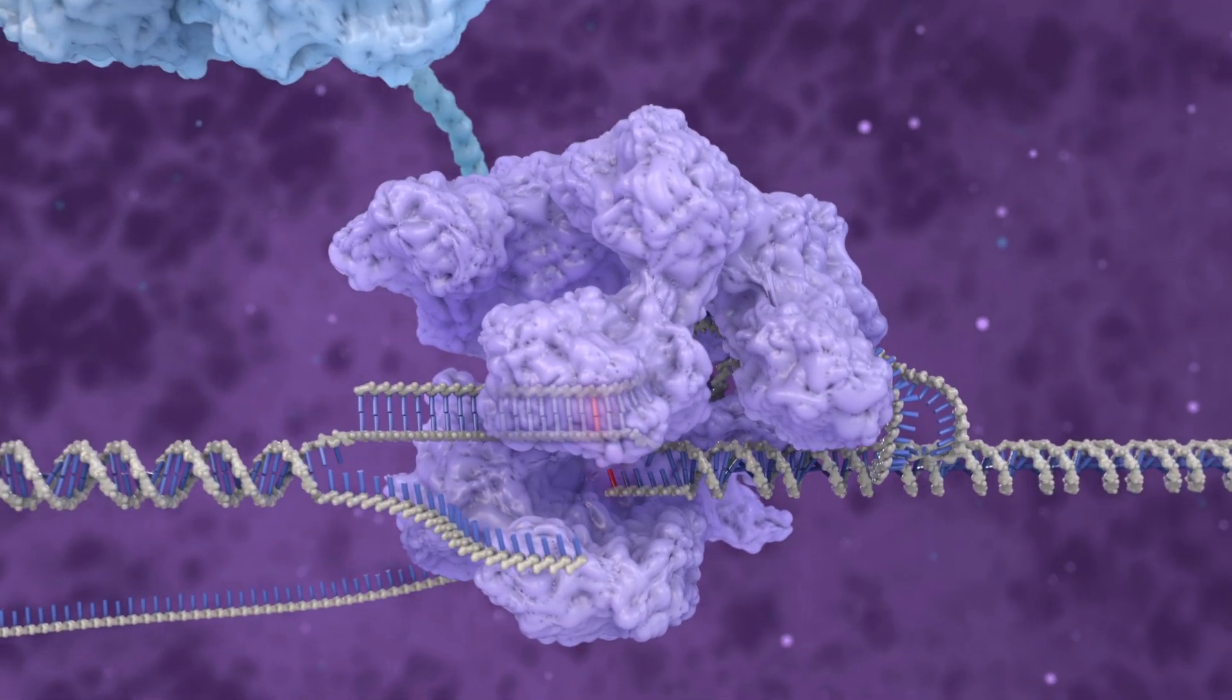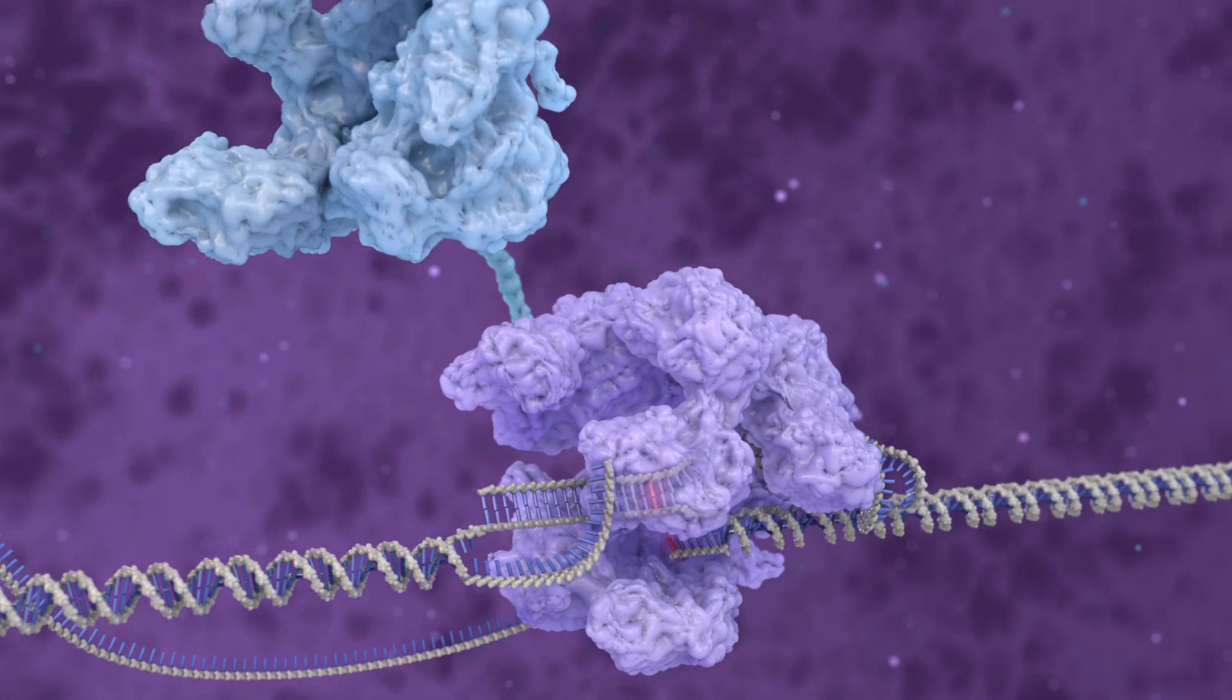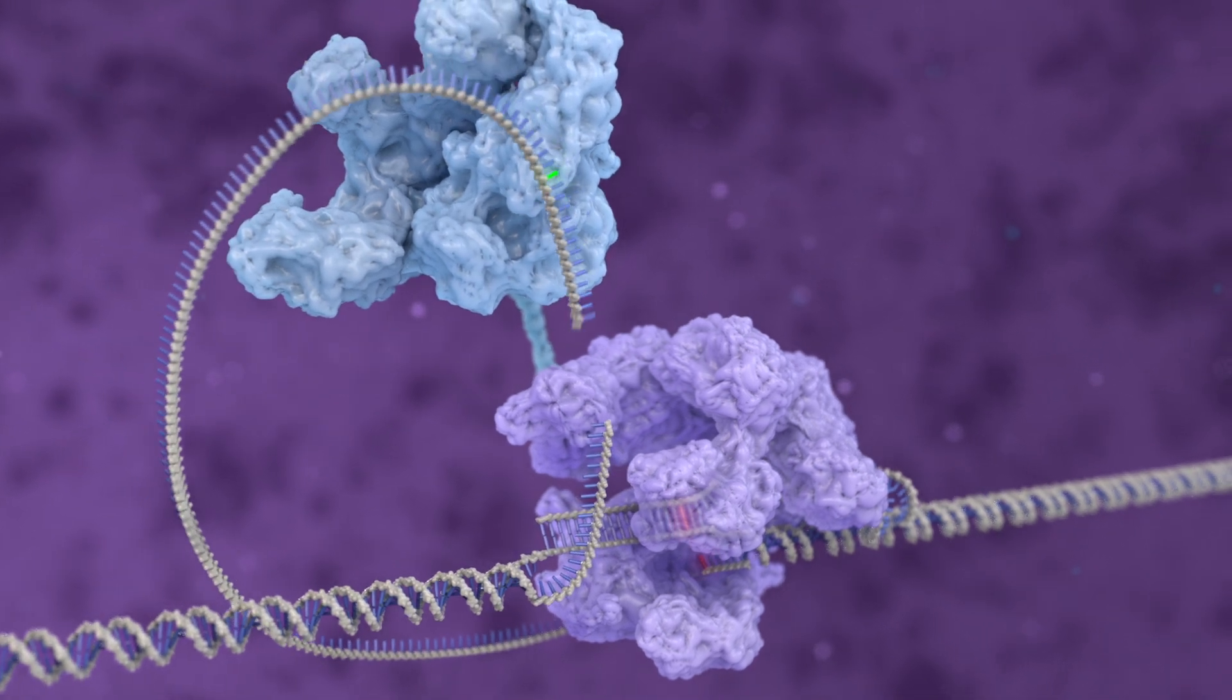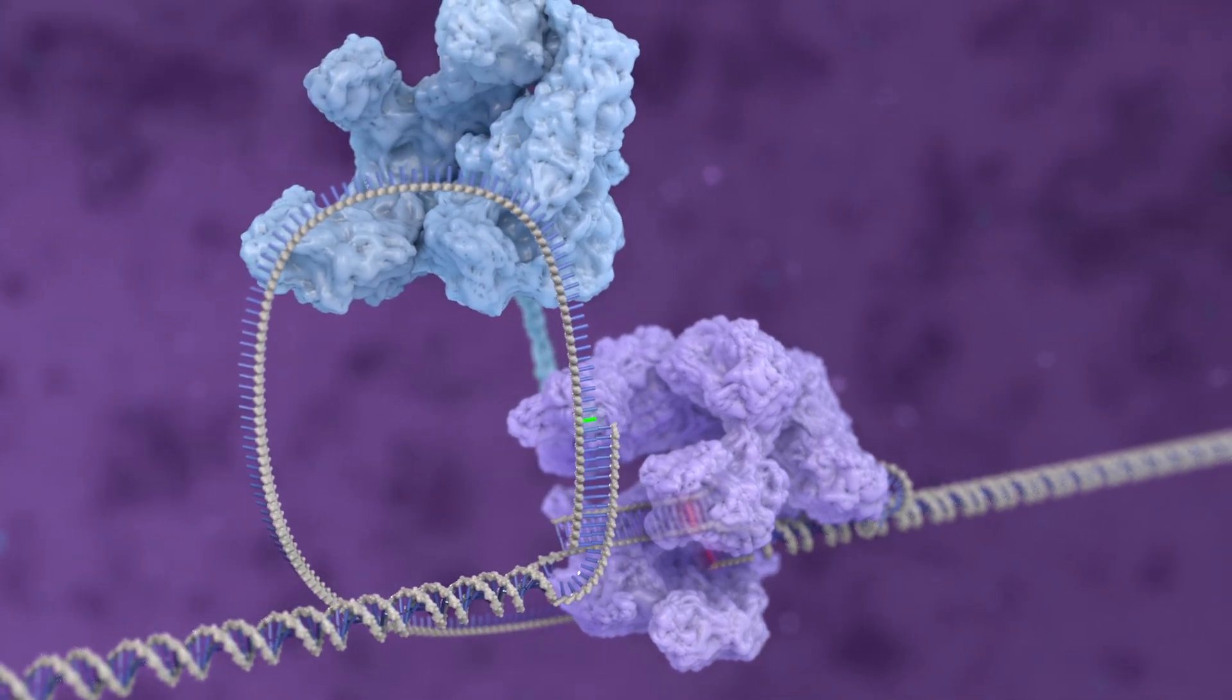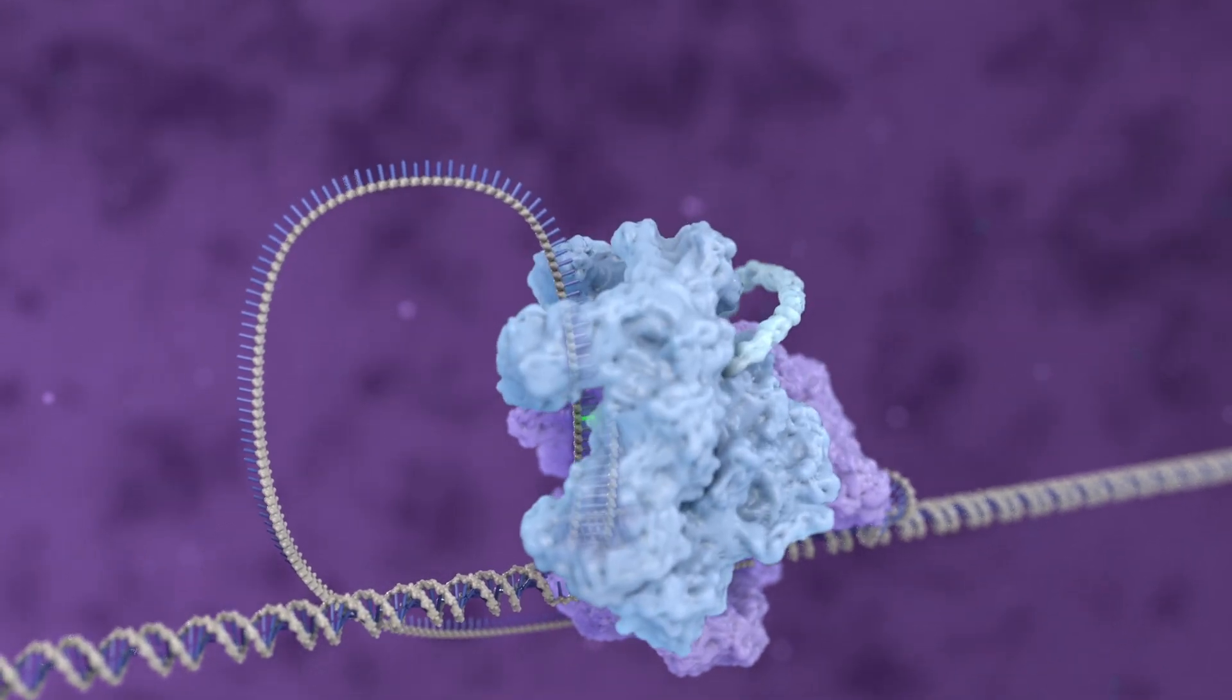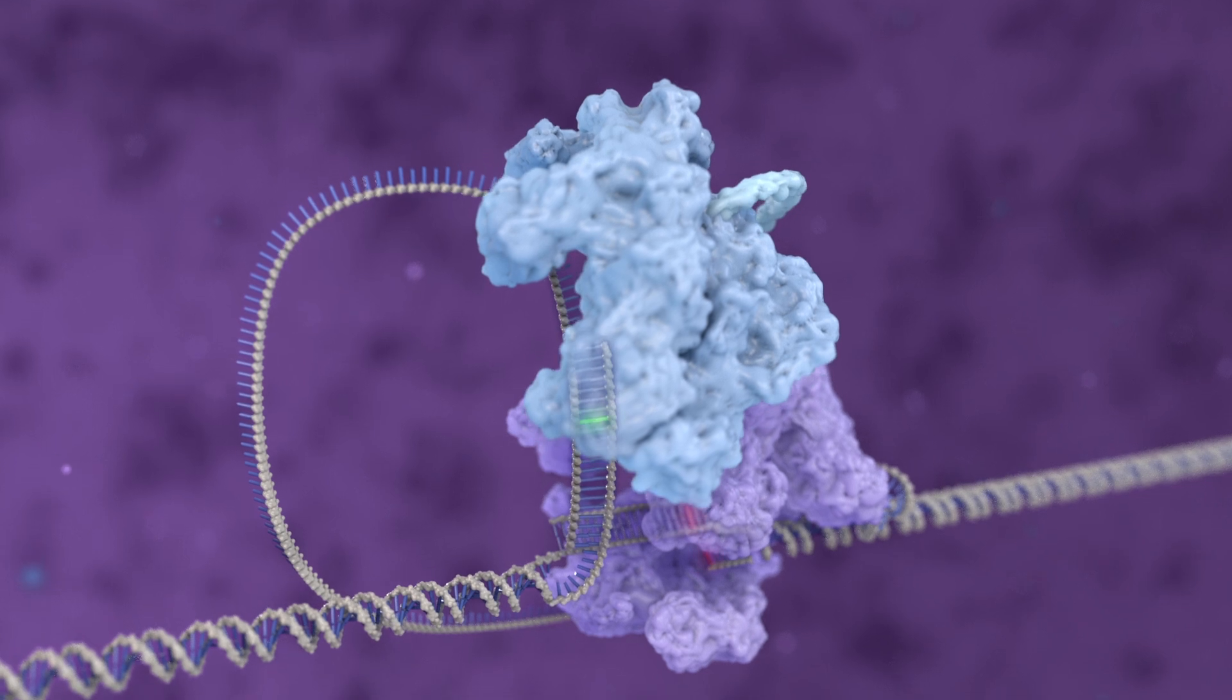The nicked single-stranded DNA then binds to the replace sequence of the PEG RNA in the region to which it is complementary. The RT domain of the prime editor copies the corrected DNA sequence using the PEG RNA's replace sequence as a template.